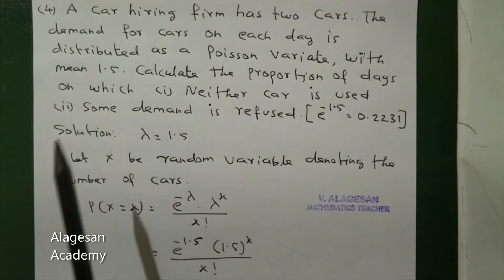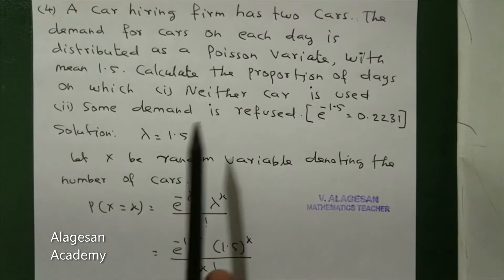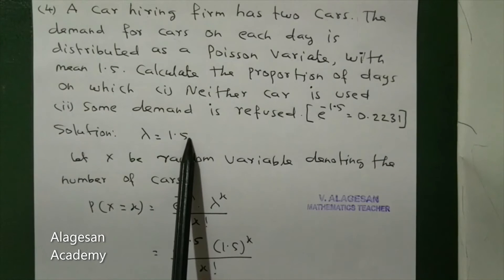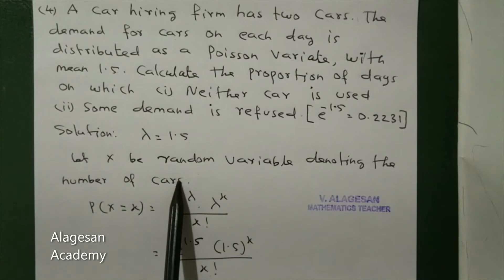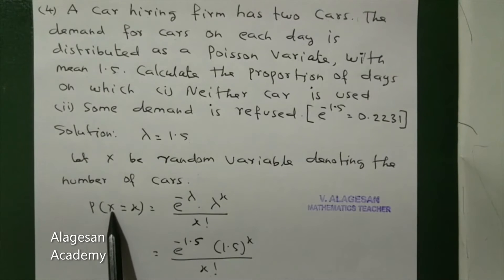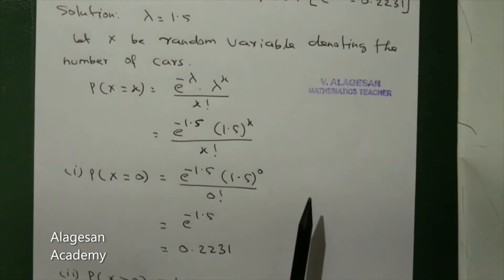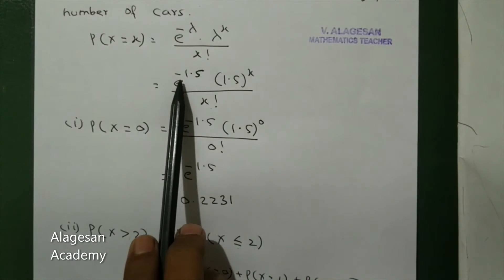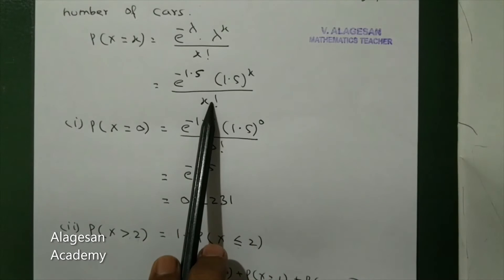In the second question, we have to find P of X greater than 2. The value of e to the power minus 1.5 is given. Now, lambda is equal to 1.5. X is the random variable denoting the number of cars. P of X equal to x is: e power minus lambda, multiplied by lambda power X divided by X factorial. Substituting lambda equals 1.5, we get e power minus 1.5 into 1.5 power X by X factorial.